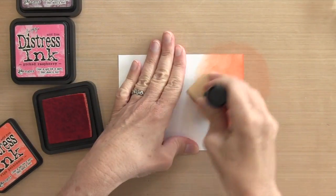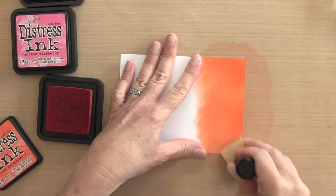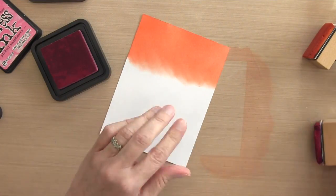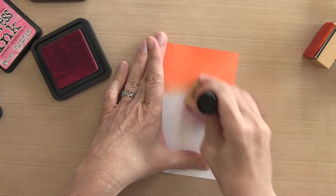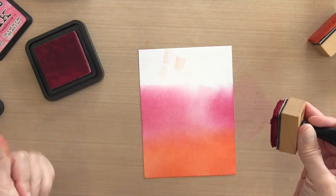This is watercolor cardstock—it's Canson XL mixed media paper—and I'm using three different colors of distress ink. Now, I also did this technique on regular paper. I did it with oxide ink on regular paper and on watercolor paper.